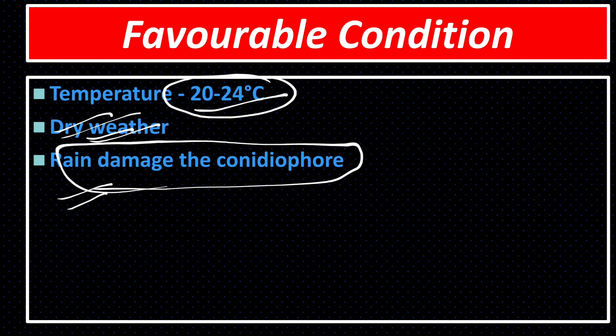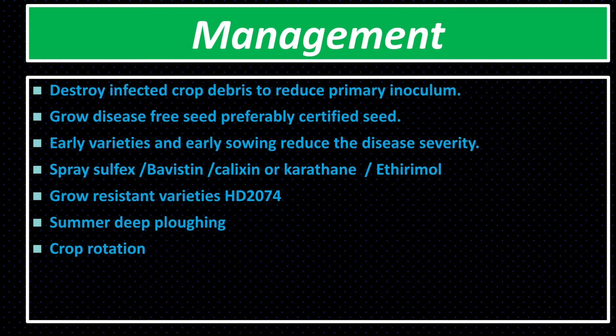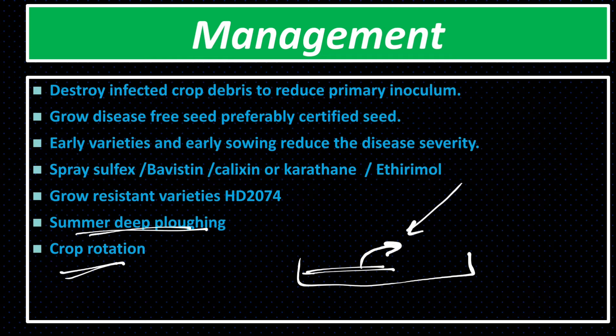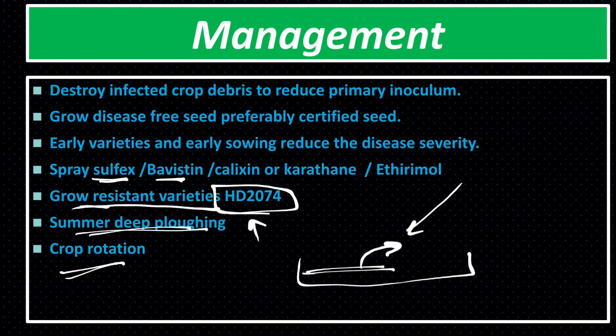For management of the disease, we should always adopt integrated disease management practices like crop rotation with non-host — we should not grow the same crop in the same field repeatedly. Summer deep ploughing should be done so that pathogens present in the soil come to the surface and are killed by the sun's heat. Grow resistant varieties like HD 2074, which is resistant to powdery mildew.